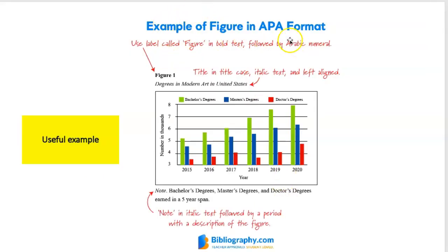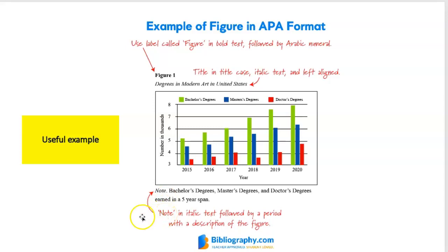Here's an example of a figure that is properly cited using APA formatting. In our college we sometimes teach APA formatting; we also use Harvard and sometimes Oxford. You'll see here is a bar chart called Figure 1, and it has a title in italics: Degree in Modern Art in the United States. Underneath it, you may wish to caption it with a note. The APA format asks you to use the word 'Note' in italics followed by a period, with a description of the figure. That is a very well-referenced figure that shows exactly what it's doing there and helps the reader understand its function within the report.